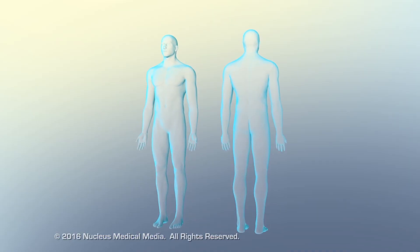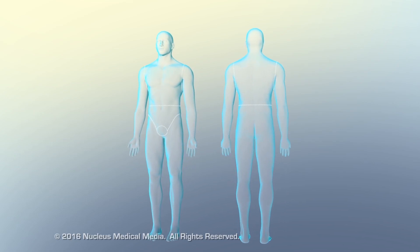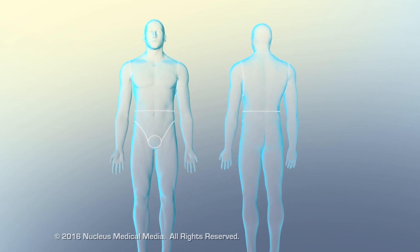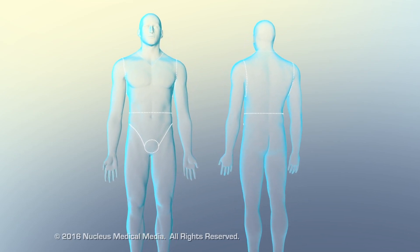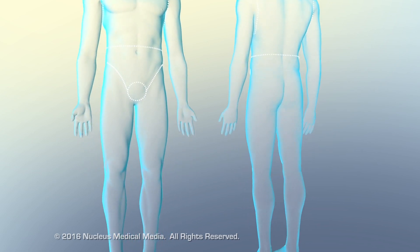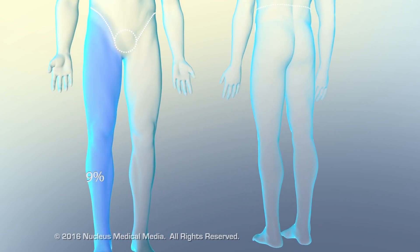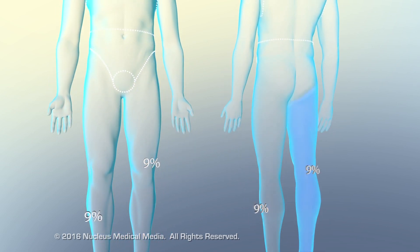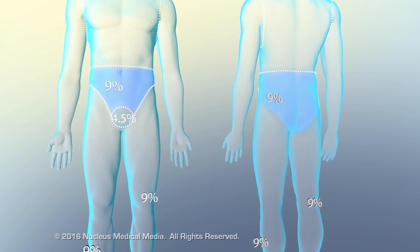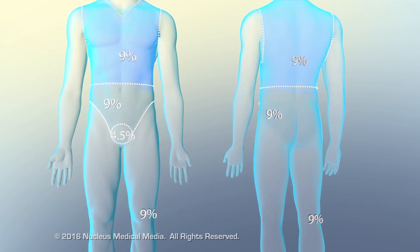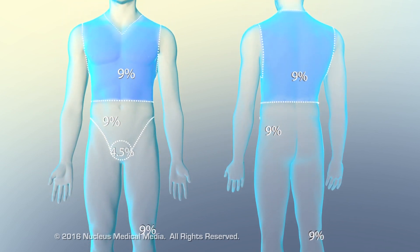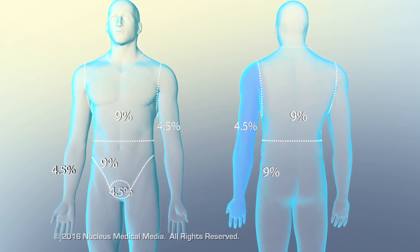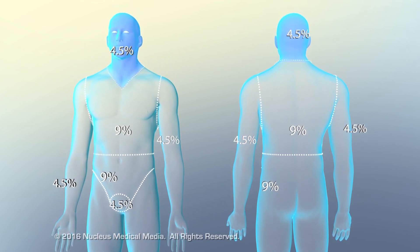Burns can also be evaluated by determining the percentage of body surface area they cover. This percentage can be estimated quickly using the Rule of Nines, a formula in which each body part is assigned a value of 9% or a multiple of 9.